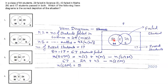So 43 minus 5 gives 38 students who failed only in maths, and 29 minus 5 gives 24 students who failed only in science. This corresponds to the fourth option, which is the correct Venn diagram.